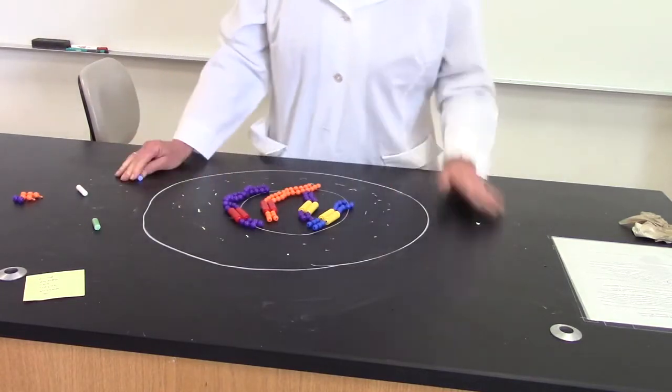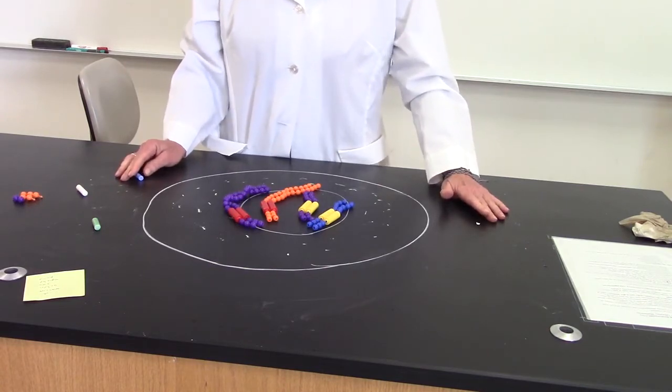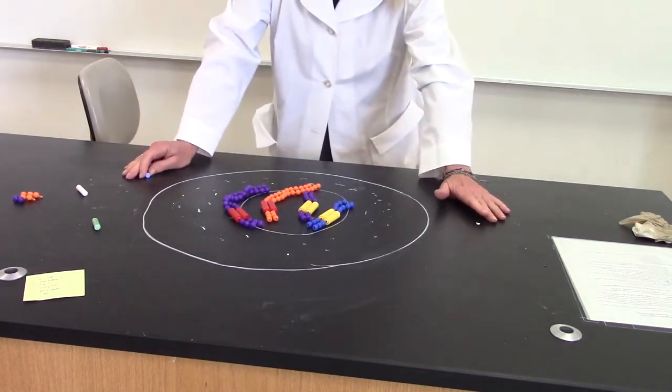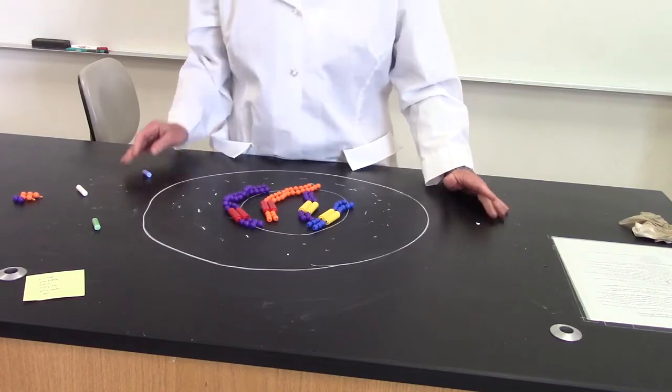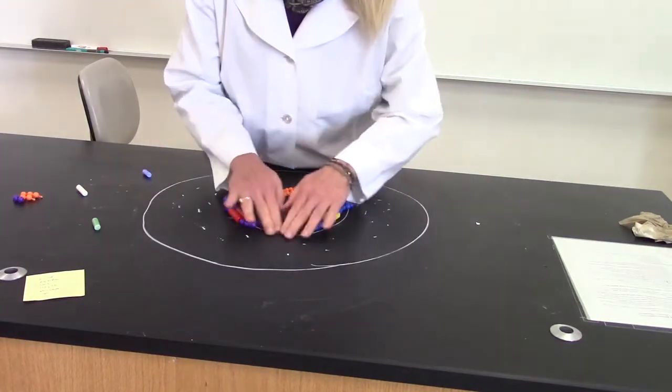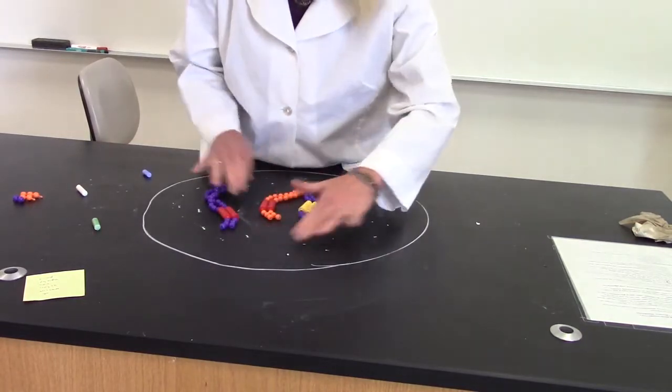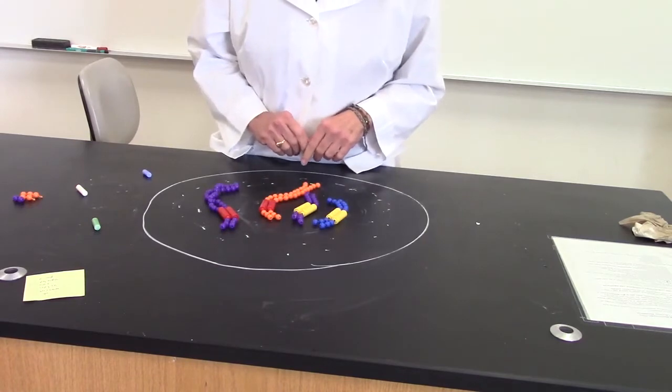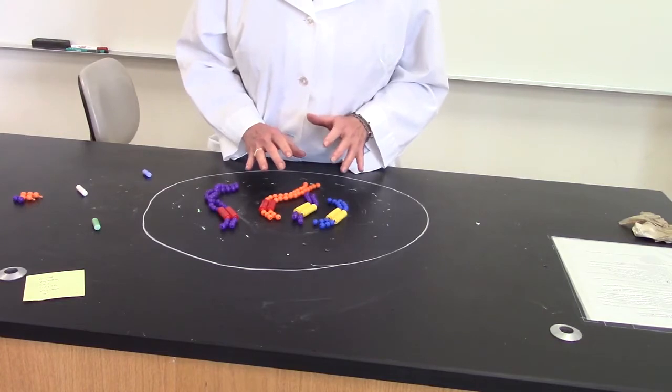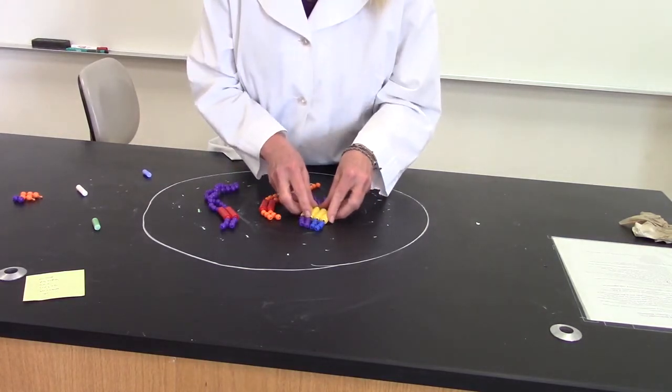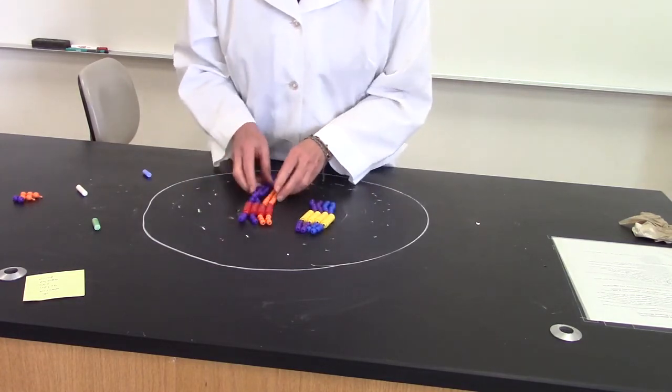Now we've got G2, making extra organelles and proteins, getting ready to make the new cell. We're going to go through PMAT 1 and PMAT 2. During prophase, the nuclear envelope breaks apart, that's the same, but in meiosis we have this great big shuffling of genes that goes on called crossing over.